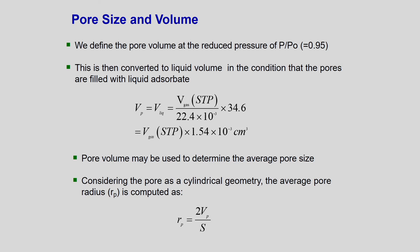For pore size and volume, we define the pore volume at a reduced pressure close to unity — because at near saturation, the entire pore is filled with liquid. The pore volume is the liquid volume, given by the gas absorbed divided by 22.4 × 10⁻³ multiplied by 34.6. Simplifying this gives the pore volume. Considering a cylindrical pore geometry, the average pore radius is computed as twice the pore volume divided by the surface area.